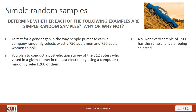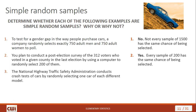Next example: you plan to conduct a post-election survey of the 312 voters who voted in a given county, by using a computer to randomly select 200 of them. This is an example of a simple random sample. There are 200 in the sample, and every way you could take 200 people from the total of 312 has an equal chance of being selected.